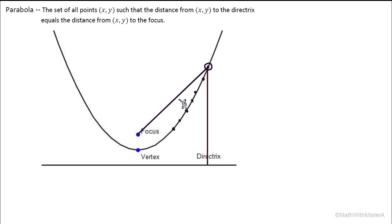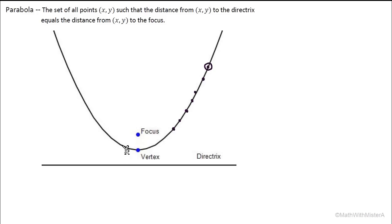This applies to any point that we pick. If you have a ruler handy you can actually put it up to the screen and measure to see that these two lines have the exact same length. Let's choose a point close to the vertex. The distance from this point to the focus and the distance from this point to the directrix — this distance is always measured as the shortest, so the line is perpendicular to the directrix. These two lines have the same length also.